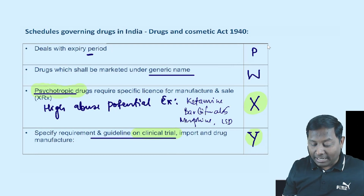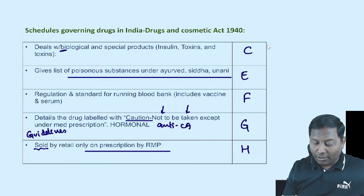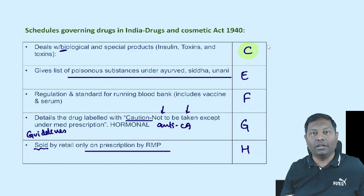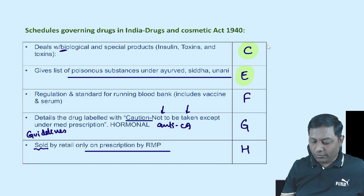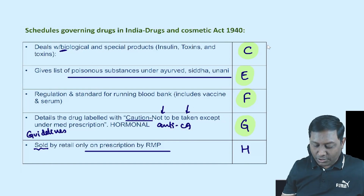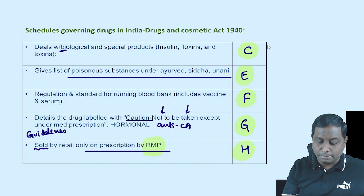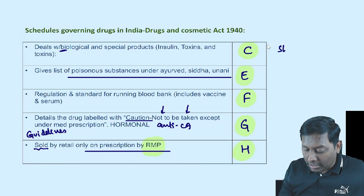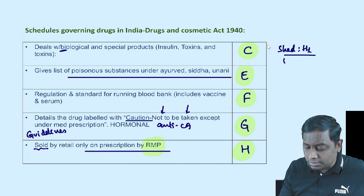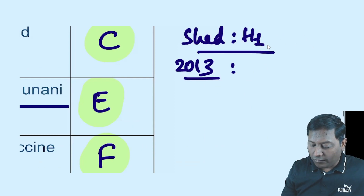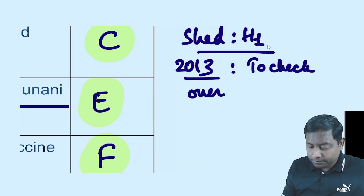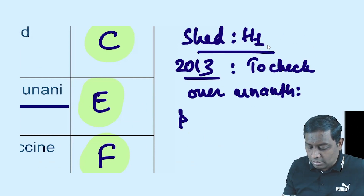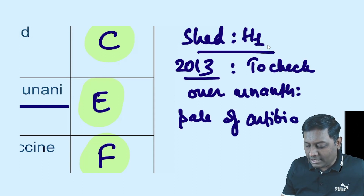Quick recap: Schedule X — exes are always psycho, psychotropic drugs requiring a specific license. Schedule W — drugs marketed under generic name, same worldwide. Schedule P — expiry period. Schedule C — biological products. Schedule E — poisonous substances under Siddha, Unani, Ayurveda (bitter taste mnemonic). Blood bank — everything frozen. Schedule G — guidelines not to be taken except on medical supervision. Schedule H — Registered Medical Practitioner prescription required.